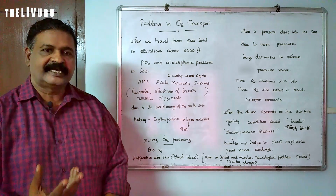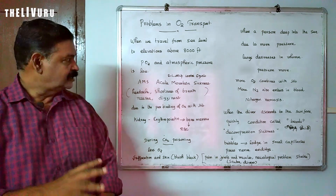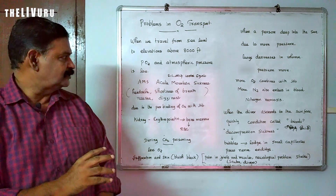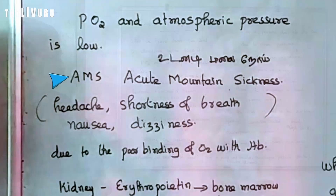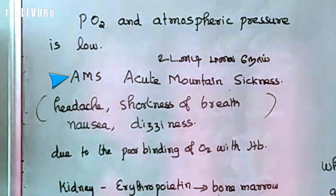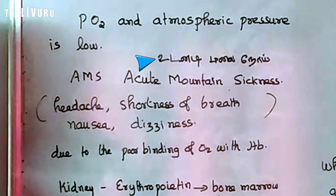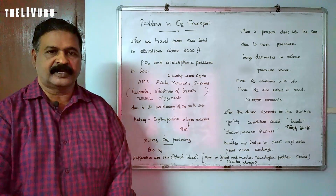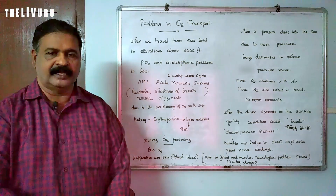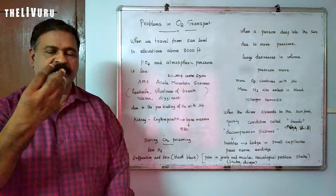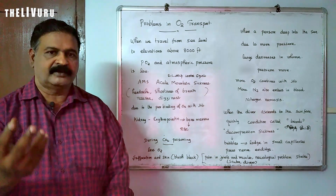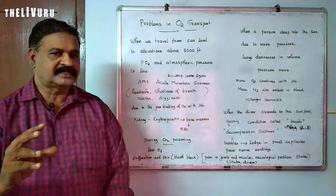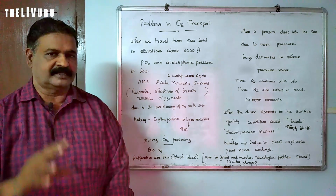We don't get enough oxygen in the blood. That's why there is a disease — a sickness. In the same way, the acute mountain sickness occurs.